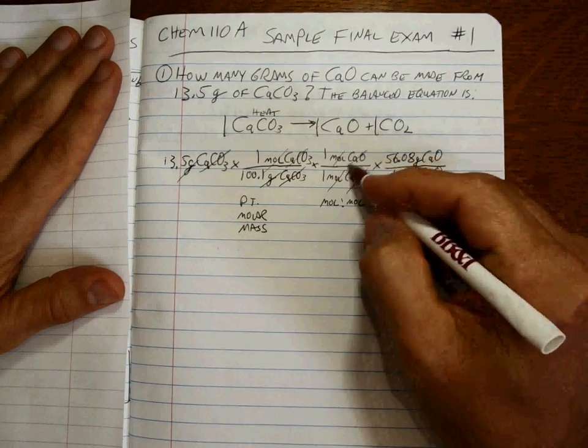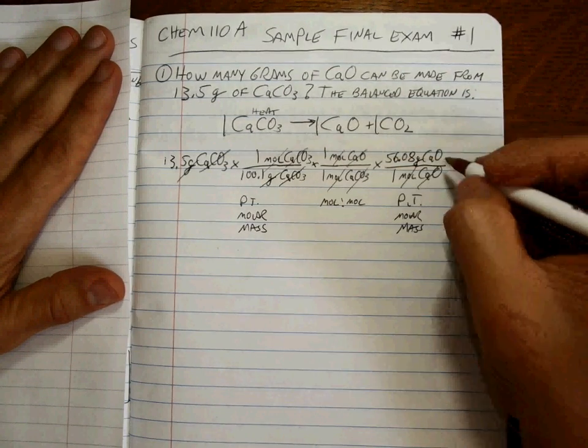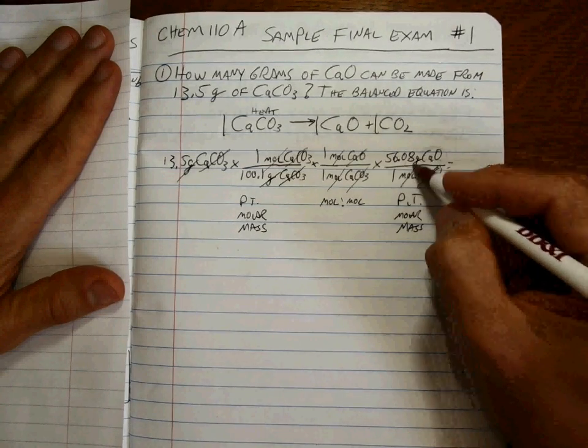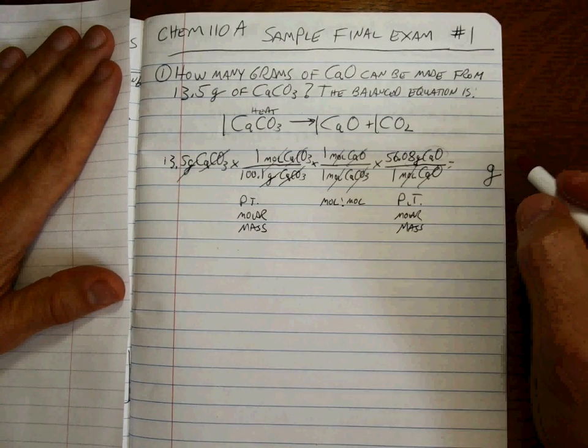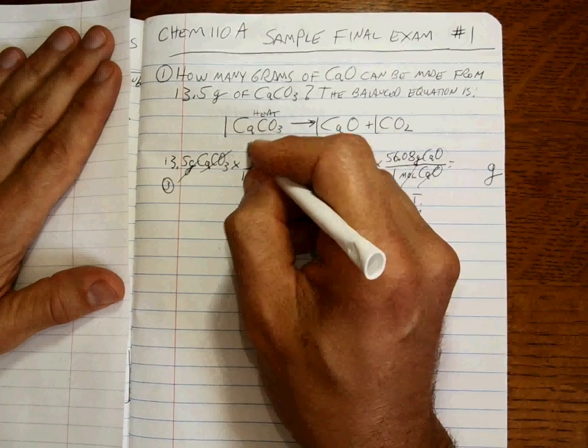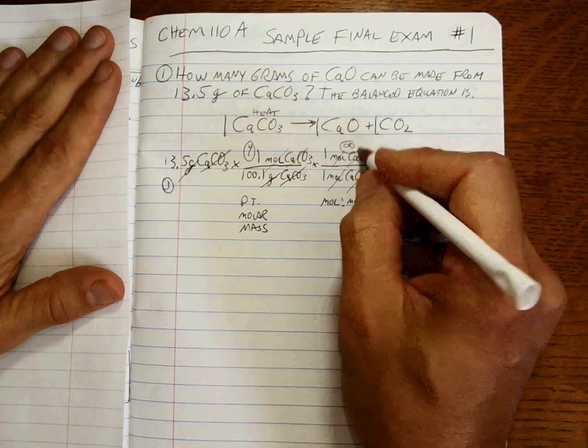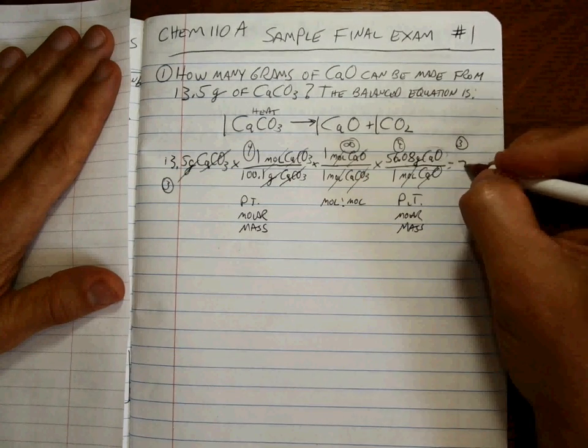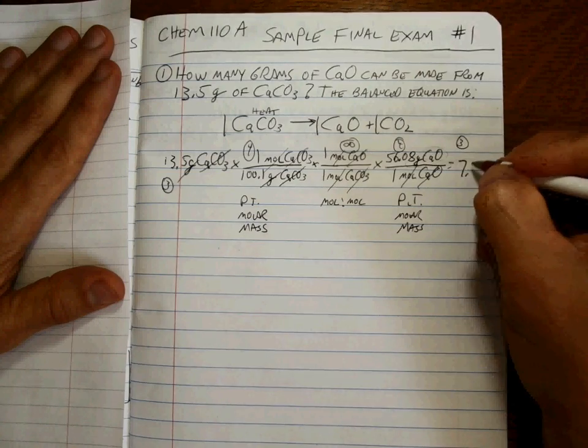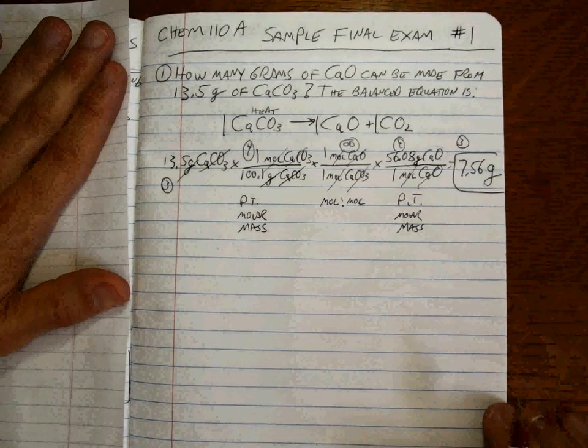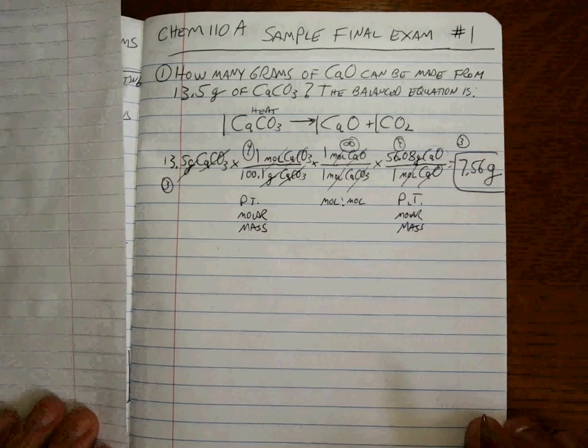Notice that the moles and the calcium oxide cancel. You're left with grams, that's the only unit you have left, of what you want: calcium oxide. Three sig figs here, four here, infinite here, four here, so the answer is three sig figs, and that's 7.56 grams. We are done. That's all there is to that.